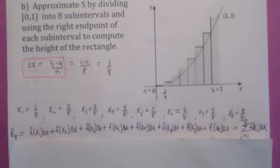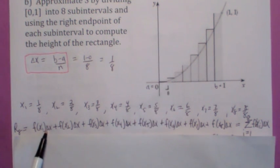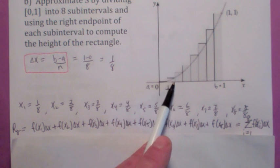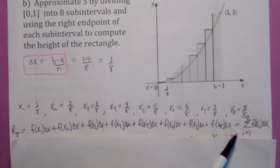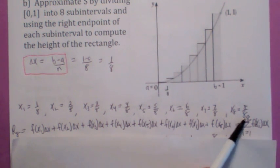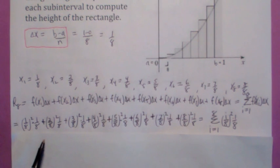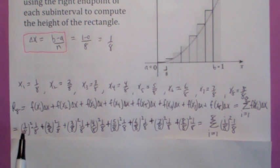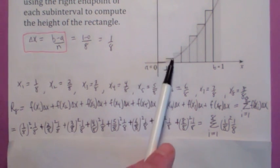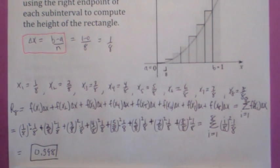The first rectangle is going to have area f of x1 times delta x, the second rectangle has area f of x2 times delta x, and so on. You could write this in sigma notation as the sum i equals 1 to 8 of f of x sub i times delta x. In this specific example, the first rectangle has area 1 eighth squared times 1 eighth, the second has area 2 eighths squared times 1 eighth. That could be written as the sum i equals 1 to 8 of i over 8, quantity squared, times 1 eighth. If you add those up, you get 0.398.